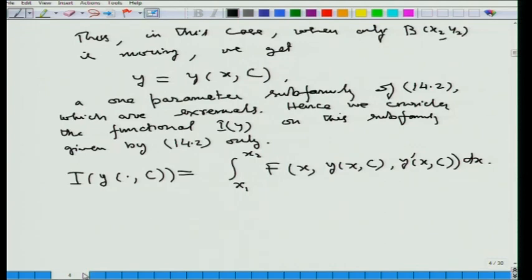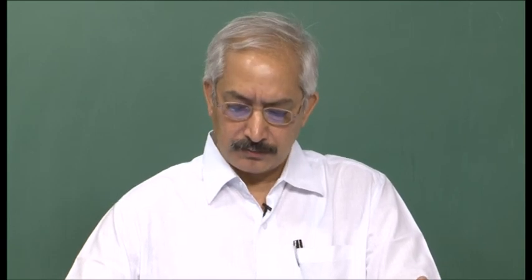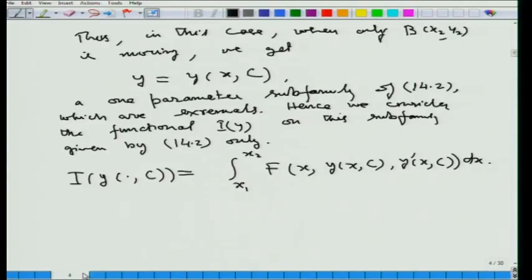We can restrict our consideration of variation of the functional over the family of extremals. Euler's equation f_y minus d/dx of f_{y'} equal to 0 is a second-order differential equation, which gives us a two-parameter family of extremals y = y(x, c1, c2). If we assume point a=(x1,y1) is fixed, then one of the two constants gets determined, and we get a one-parameter sub-family y = y(x, c) of extremals.